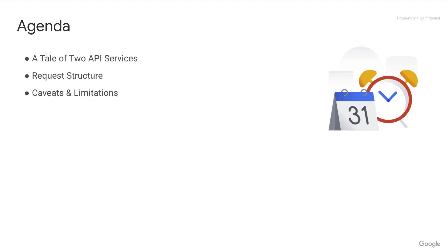Here's what you can expect from today's video. I'll talk about the two components of the Change History feature in a tale of two API services. Then I'll describe the request structure, and then wrap up this episode with practical limitations.